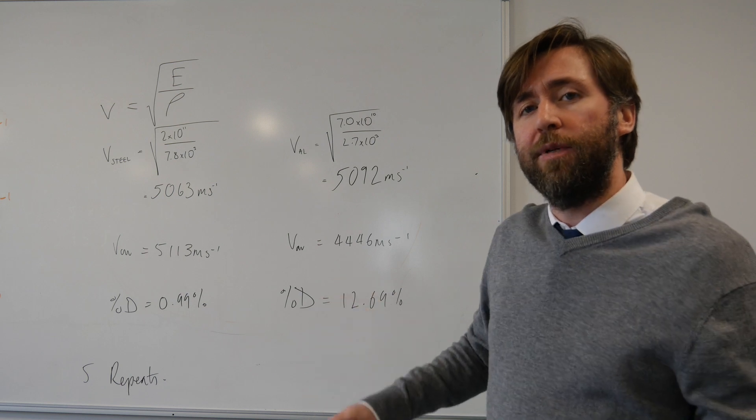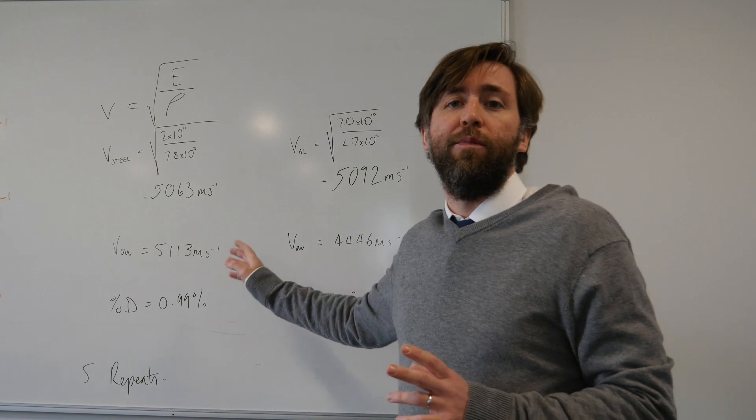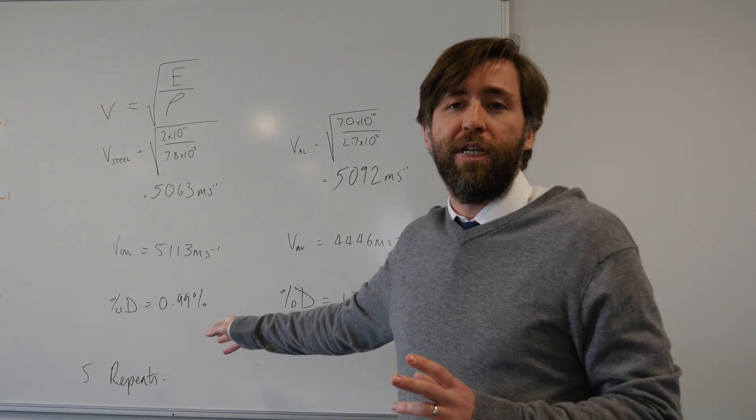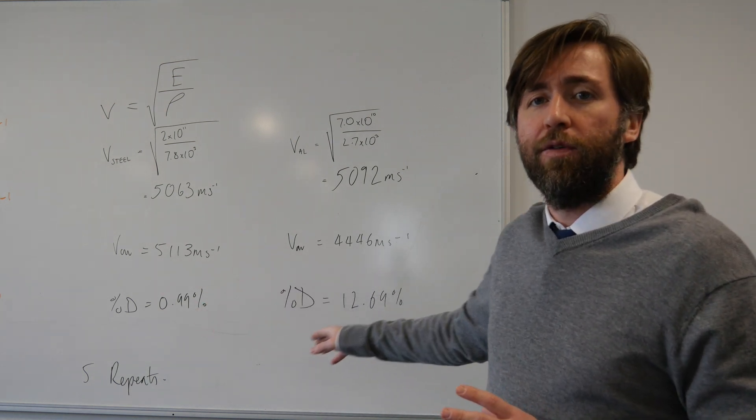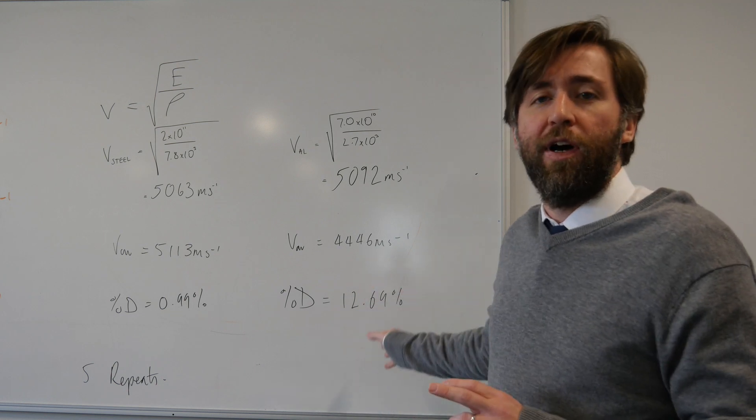We think that might be because most aluminiums are actually alloys, they're not pure aluminium. Whereas this almost certainly will be mild steel. So we've got just about 1% difference there for the mild steel, but we're quite considerably about 12-13% off for aluminium.